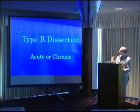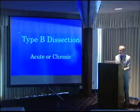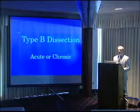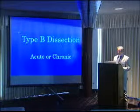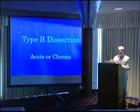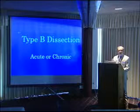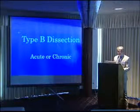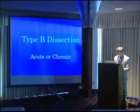Some complicated type B dissections — first time they present to the hospital, they come with paraplegia. That's a very difficult complication because as the descending aorta separates, all those tiny little branches that feed the spinal cord disrupt, and blood supply to the cord gets compromised. As a result, the patient becomes paraplegic.